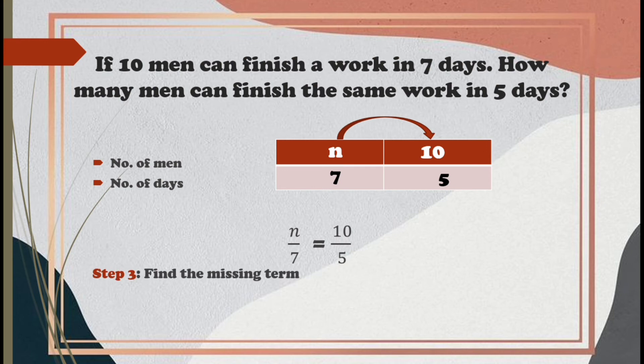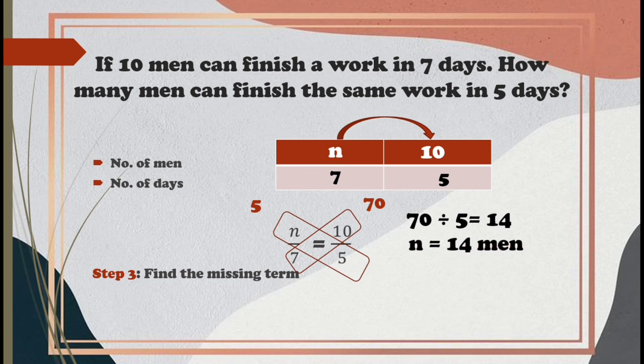Now, we are ready for our third step. Let's find the missing term. Our given proportion is N over 7 is equal to 10 over 5. Let's have cross multiplication. 5 times N is 5N, but let's write 5 only. 10 times 7 is 70. Now, the next step is to divide 70 by 5. 70 divided by 5 is 14. You are right! Therefore, N is equal to 14 men. This means that to finish the same work in 5 days, we need 14 men.